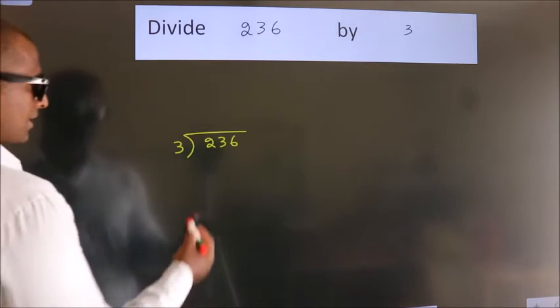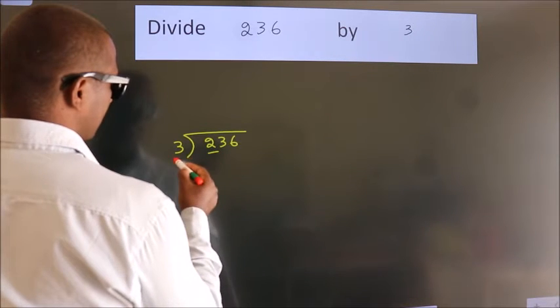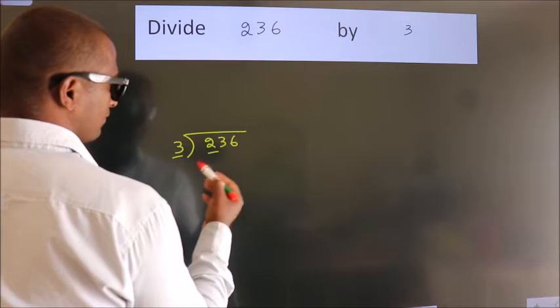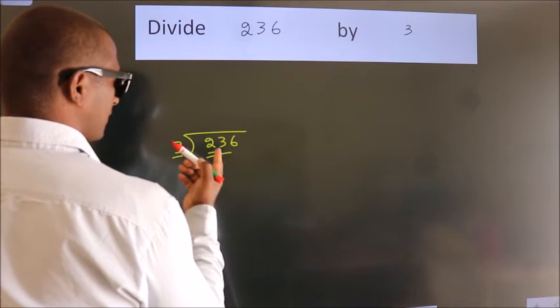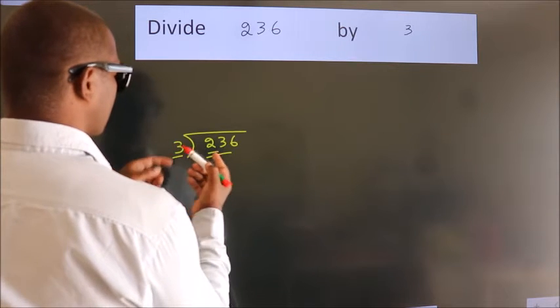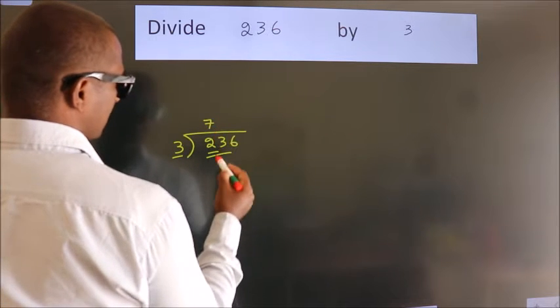Next, here we have 2, here 3. 2 is smaller than 3, so we should take 2 numbers: 23. A number close to 23 in the 3 table is 3 times 7 equals 21.